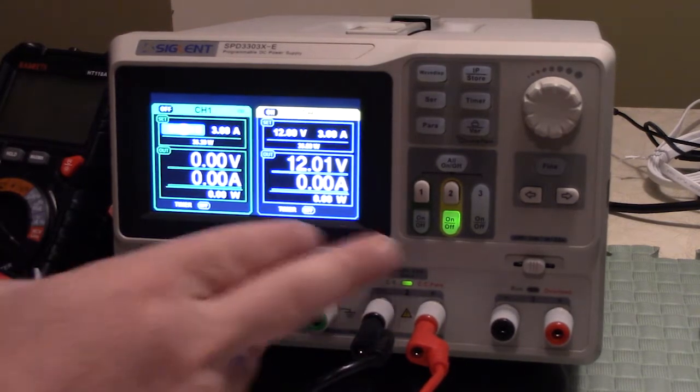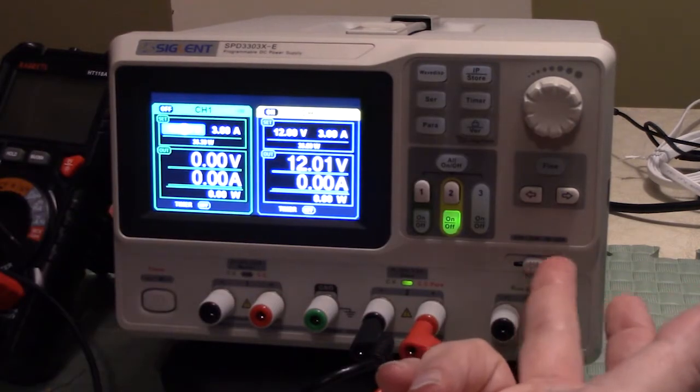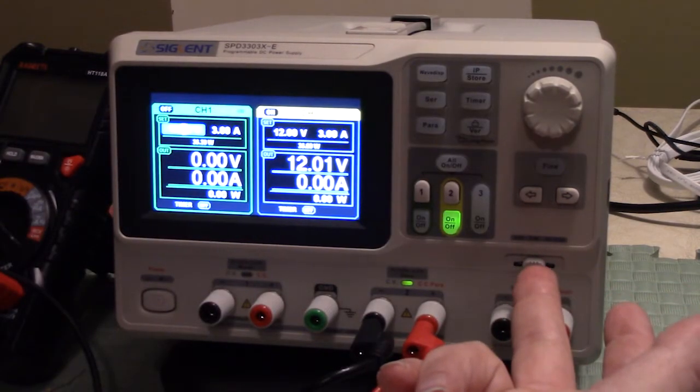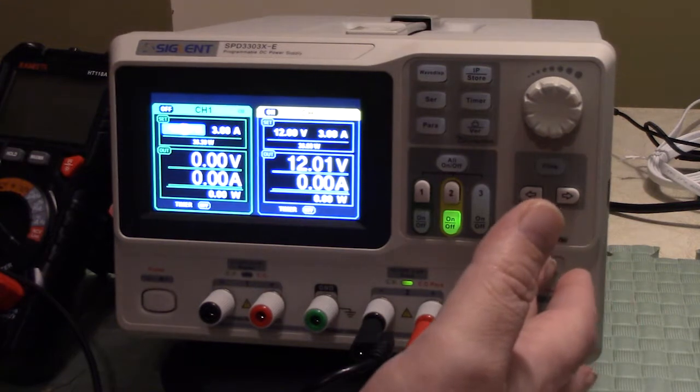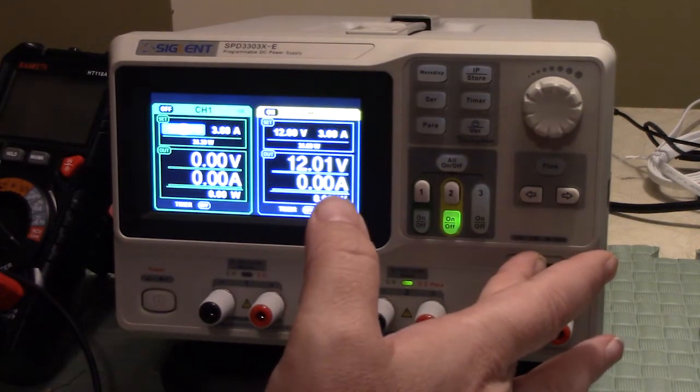So you have two independent 30 volt programmable outputs. This one is switch selectable to any of the logic families which is nice because you don't want this programmable, you want this manually stuck so you don't burn up your logic levels.